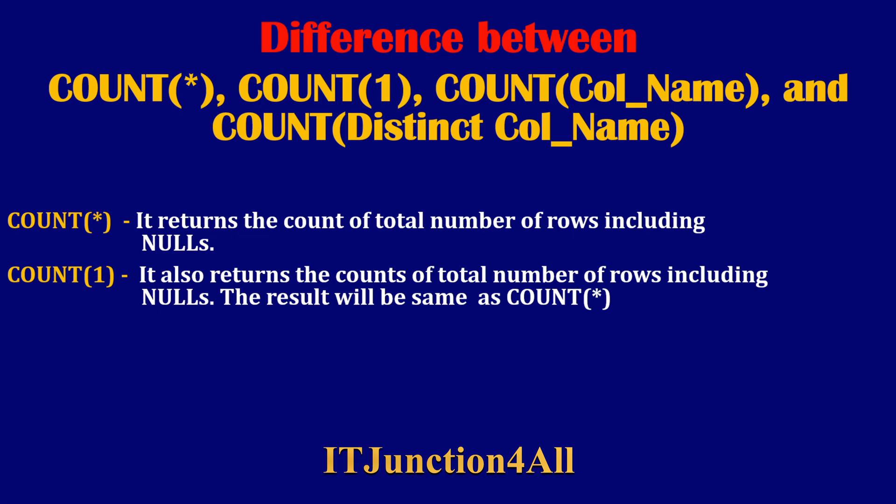Next is COUNT(1). Practically there is no difference between COUNT(1) and COUNT(*) — it also returns the count of total number of rows including nulls. Some people have a misconception that COUNT(1) represents the count of rows in the first column, but this is not true.